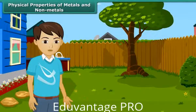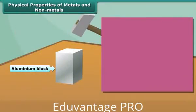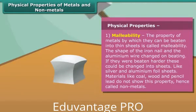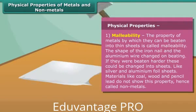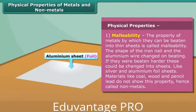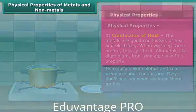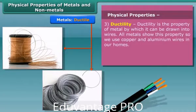Now let's know about their properties. First, we look at the physical properties. The first property of metal is its malleability — by this property, metals can be beaten into thin sheets. Non-metals don't show this property. Next property is conduction of heat: metals are good conductors of heat and electricity, while non-metals are poor conductors. The property of metal by which it can be drawn into wires is called ductility — it is the third property of metals.